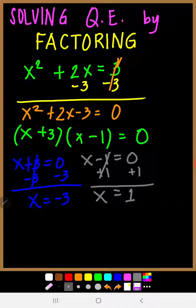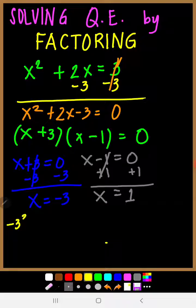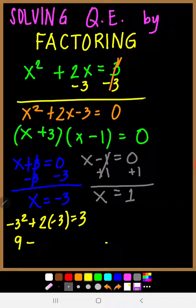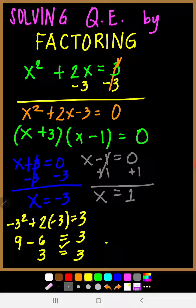The two solutions of x squared plus 2x equals 3 are x equals negative 3 and x equals 1. Let us check by substituting x equals negative 3 into the original equation: negative 3 squared plus 2 times negative 3 equals 3 gives 9 minus 6 equals 3, which is 3 equals 3. Therefore, x equals negative 3 is correct.